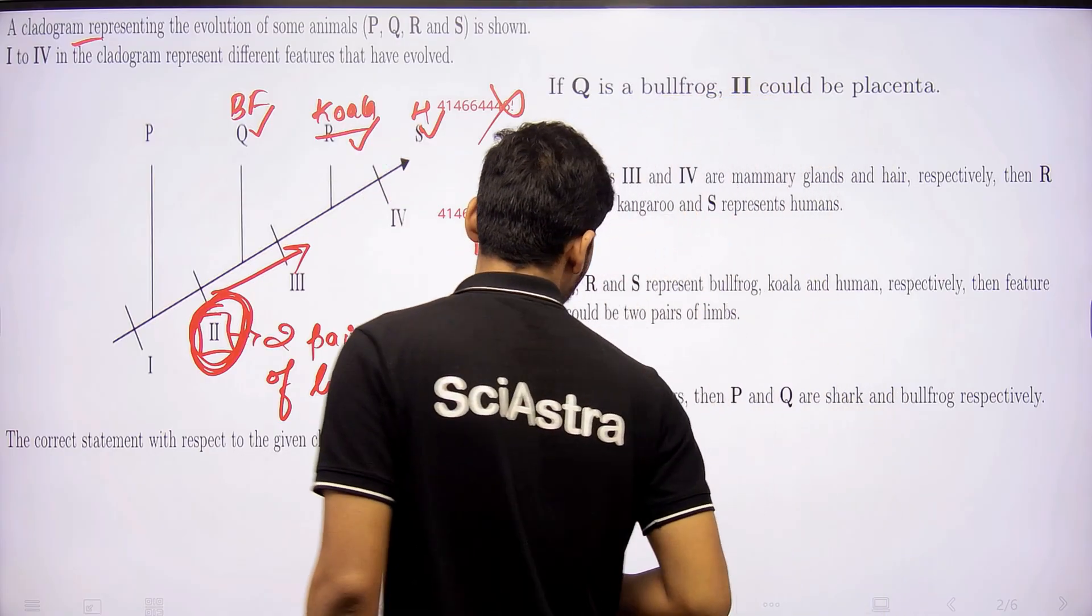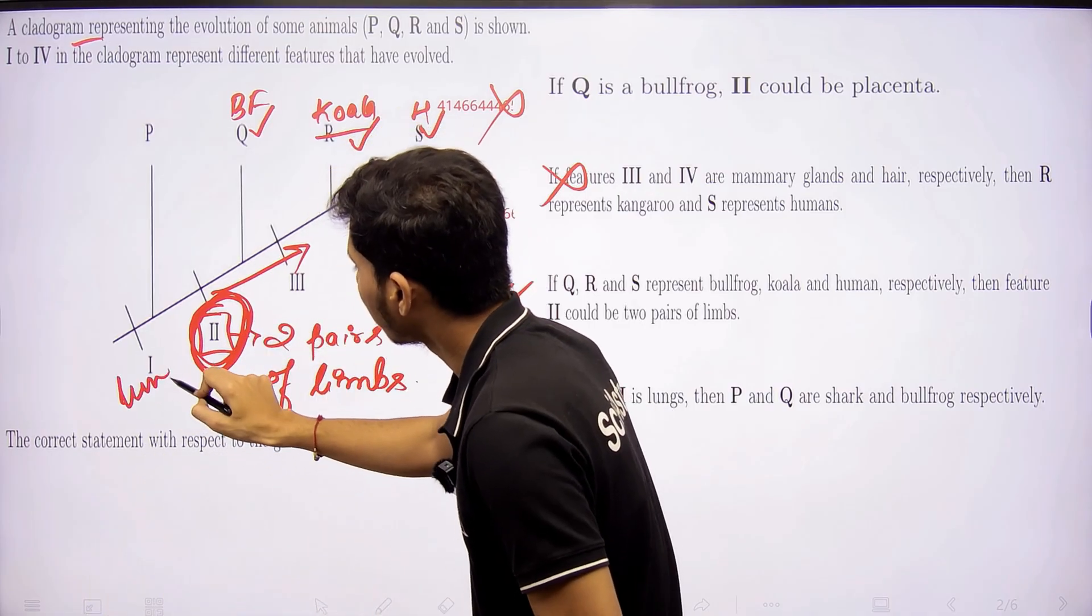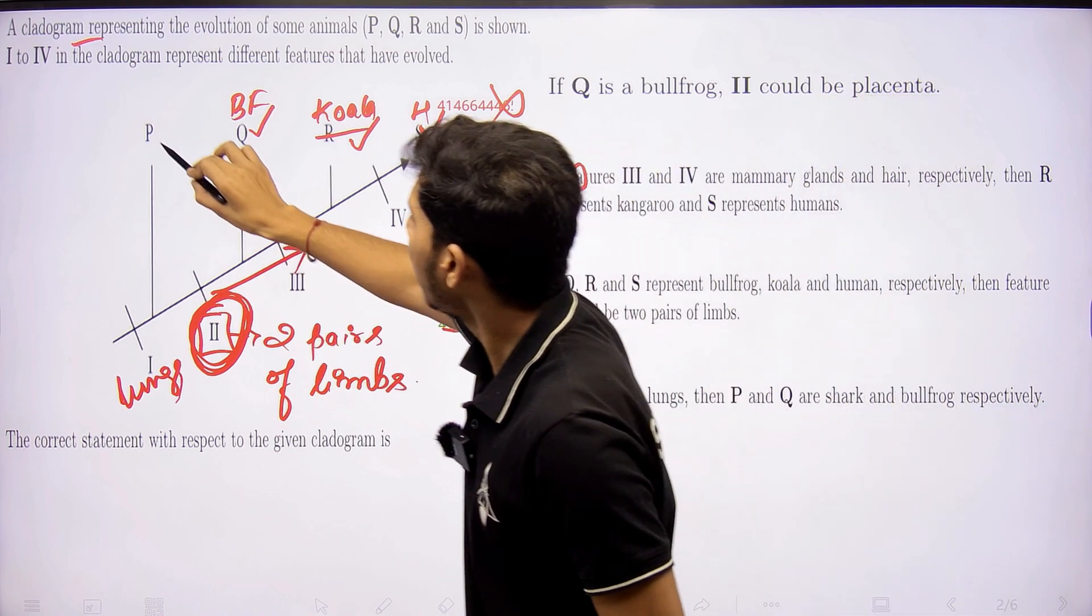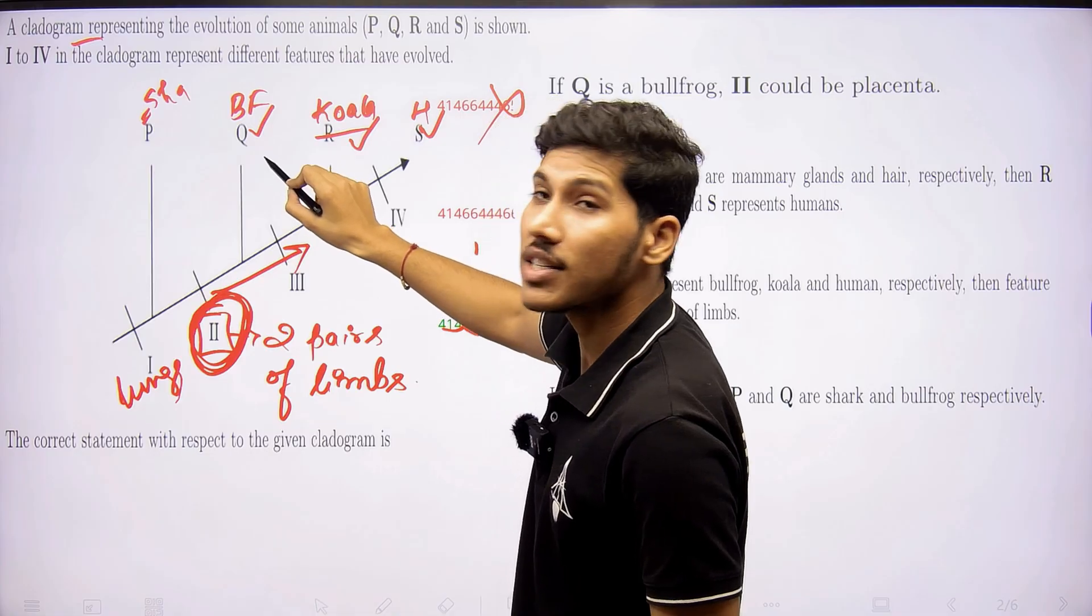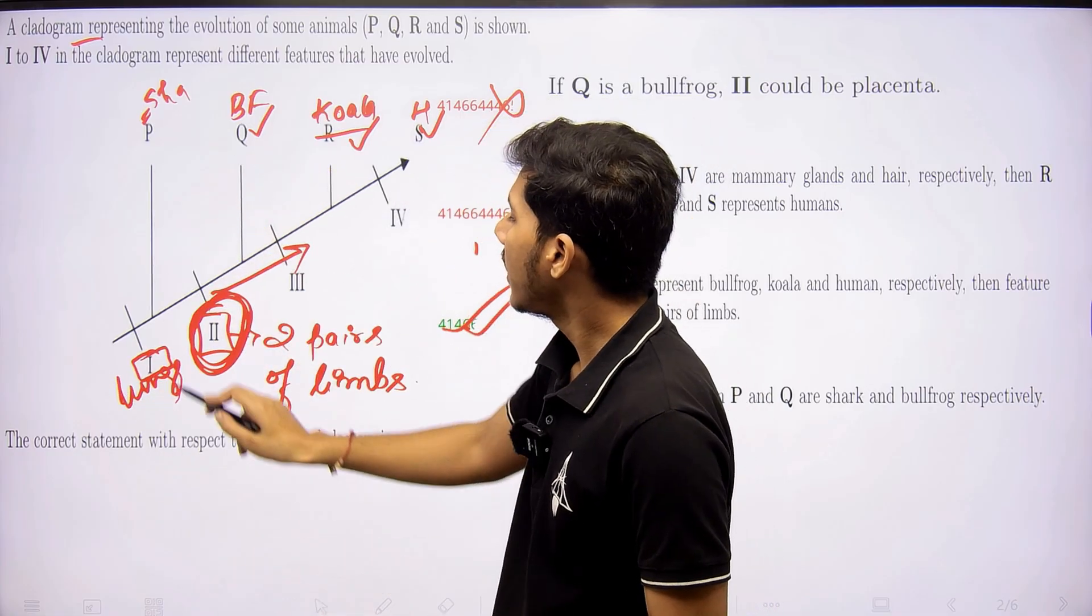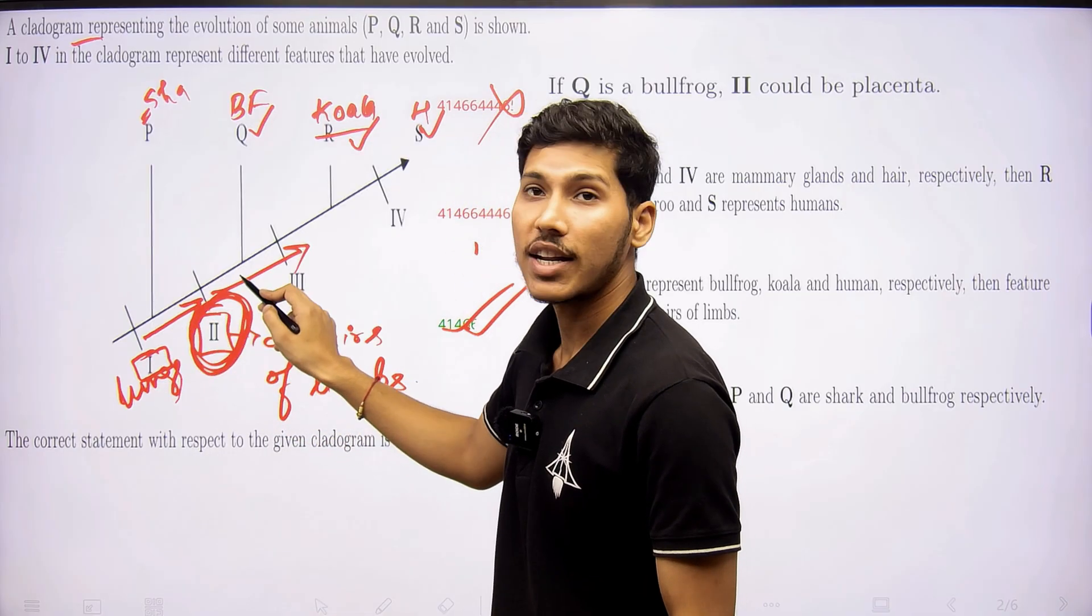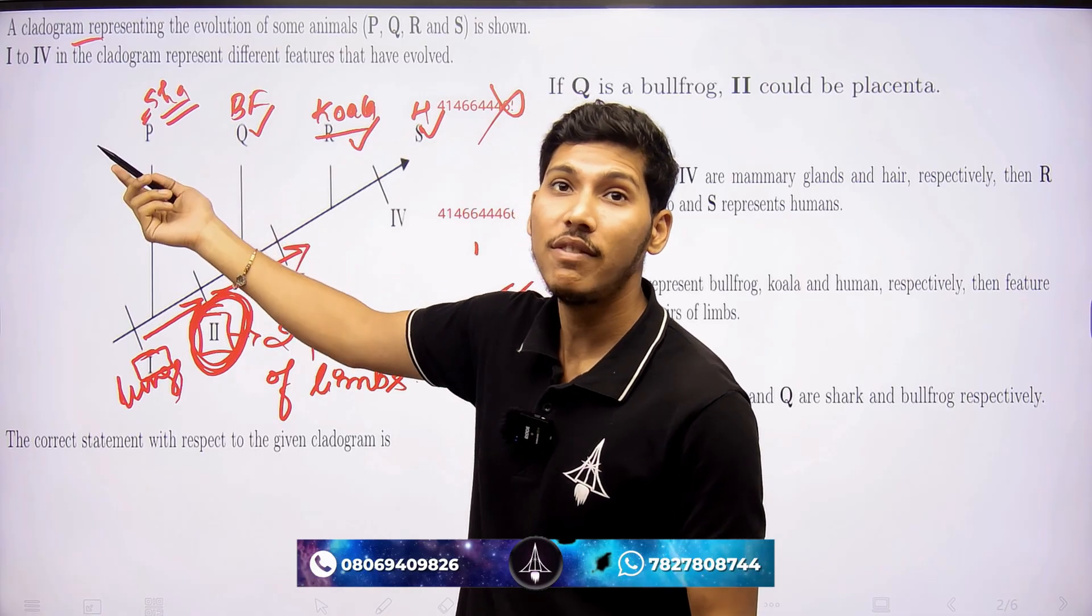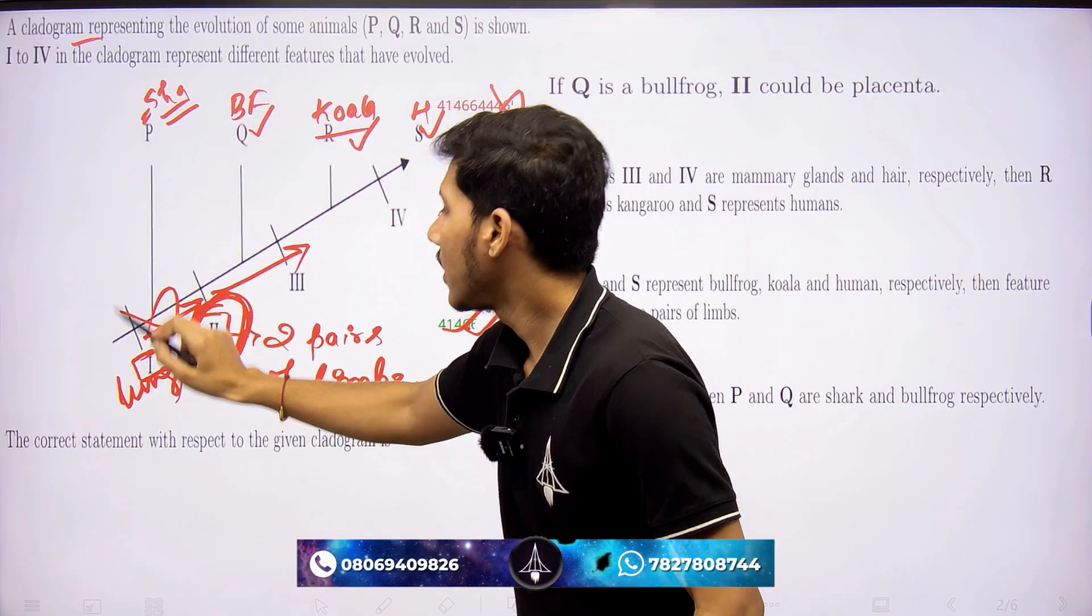Now, let's see the last one. If feature 1 is lungs, then P and Q are shark and bullfrog. Then P is shark and Q is bullfrog. This is incorrect. Because if lungs is property number 1, then all the organism after this one property will contain lungs. It means shark should have lungs. But shark have gills. It is a fish. That is why this statement is incorrect.